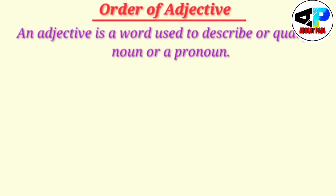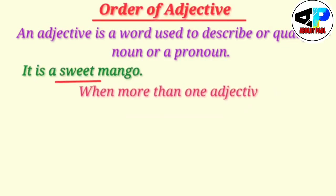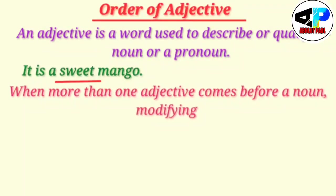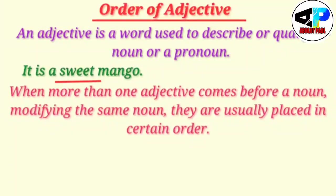Let us give some examples once again. It is a sweet mango. So when I use 'sweet' here, this word helps you understand that the mango is sweet — this word is qualifying the noun 'mango,' so it is an adjective. But the problem is, when more than one adjective comes just before a noun and they modify the same noun, they are usually placed in a certain order.